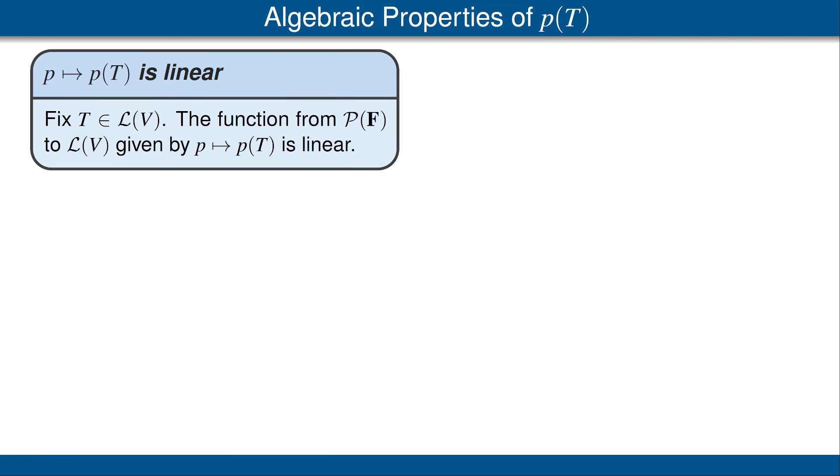Now I would like to discuss some of the algebraic properties of the map that takes a polynomial p to p of T. Here is the first property. Fix a linear operator T on V. Then the function from the vector space of polynomials with coefficients in F to L of V, given by a polynomial p goes to p of T, is a linear map from P of F into L of V. This result follows easily from the definitions, but make sure you verify it yourself.